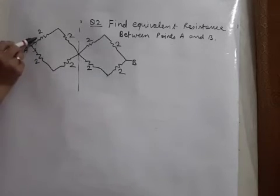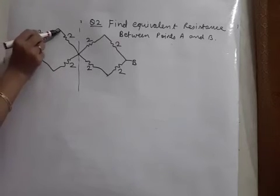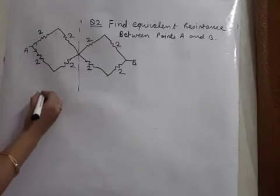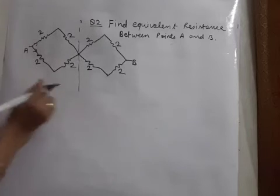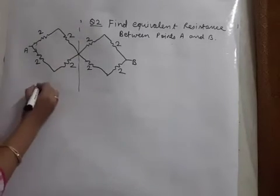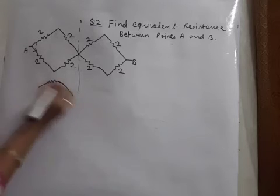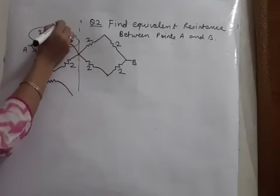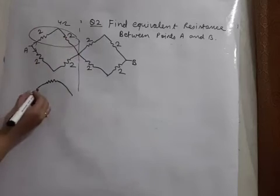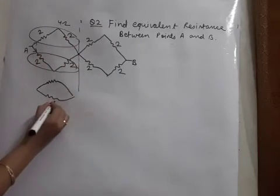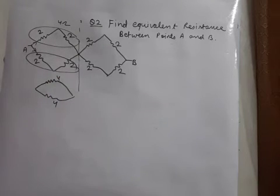Then whatever current flows in this two, same current flows in this two. That means this two and this two they are in series. So if we replace 2 and 2 by their final answer, its answer is 4 ohm because they are in series. In the same manner, this lower branch also 2 and 2 are in series. 4 ohm, 4 ohm the answers. But 4 ohm and 4 ohm are in parallel.